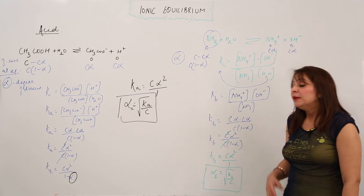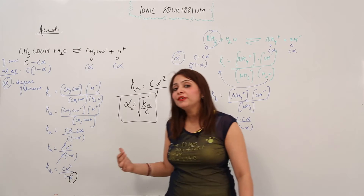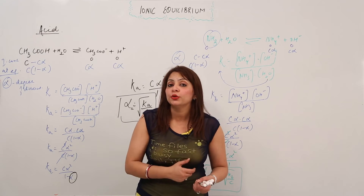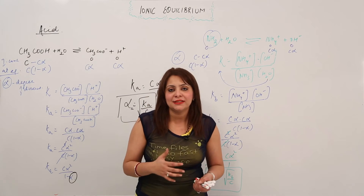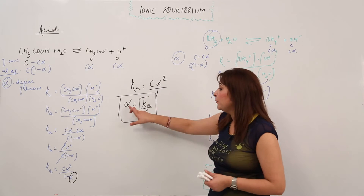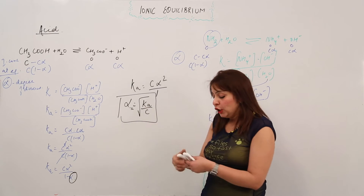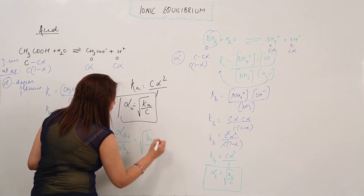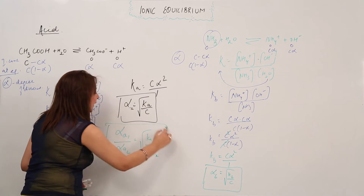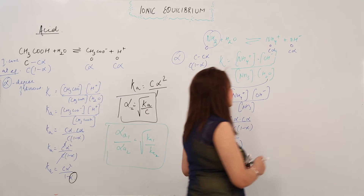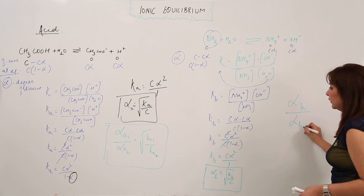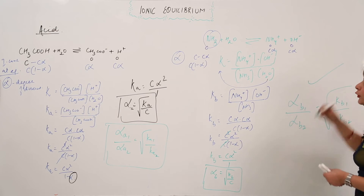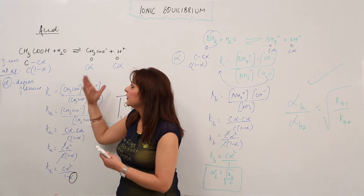Now if you are asked to compare the strengths of two acids — for example HCl and H₂SO₄ — you use the fact that alpha is directly proportional to the square root of Ka. So alpha₁/alpha₂ equals the square root of Ka1 divided by the square root of Ka2. Similarly, to compare two bases, alpha_B1/alpha_B2 equals the square root of Kb1 divided by the square root of Kb2. This is how you compare the strengths of different acids or bases.